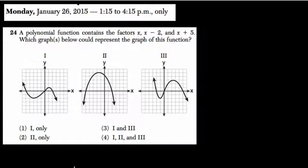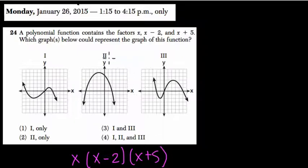So let's think about this. We've got these three factors: x times x minus 2 times x plus 5. And this is the, let's call it f of x. This is our function factors into this.